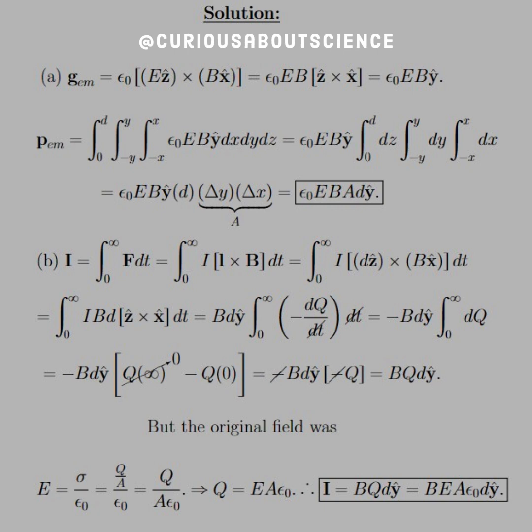E and B are just vector components, so we pull them out. Then you have ẑ cross x̂, which goes in the ŷ direction. Since that was the density, if we want to find the momentum over all the space, we integrate over dx dy dz.